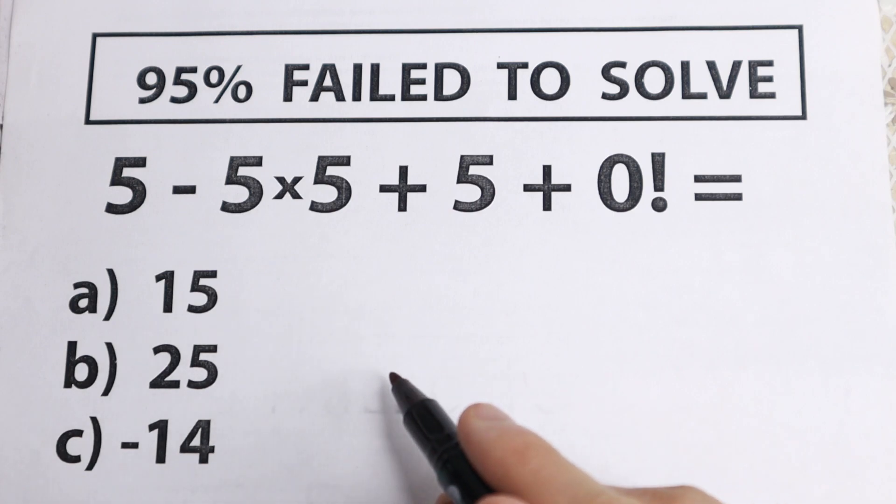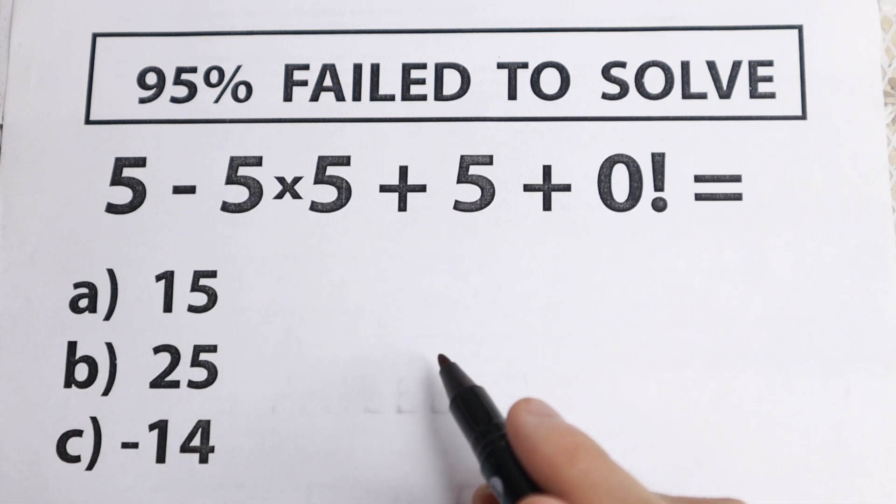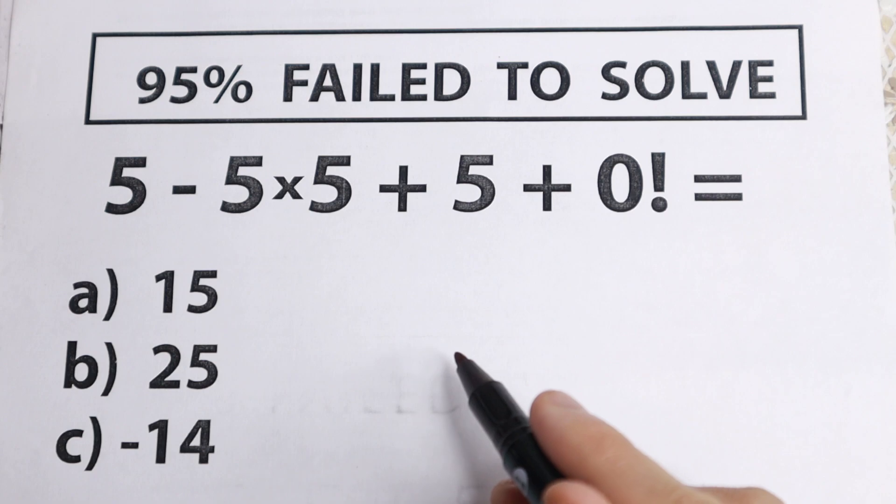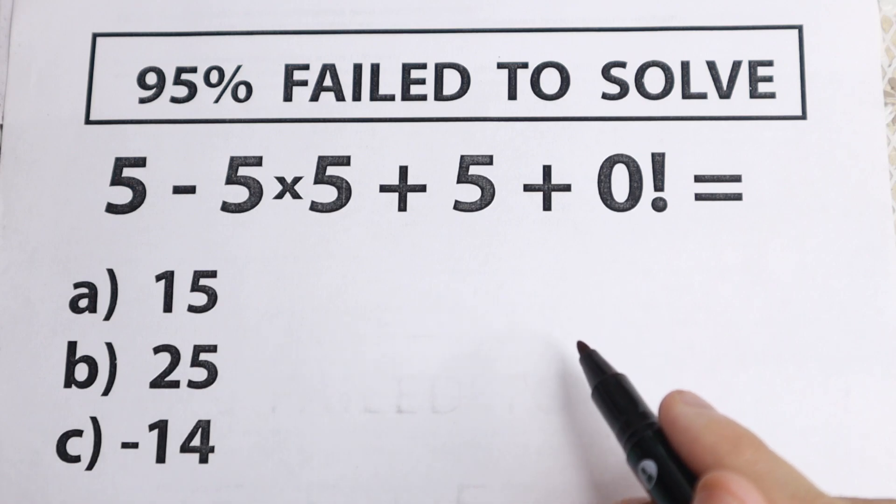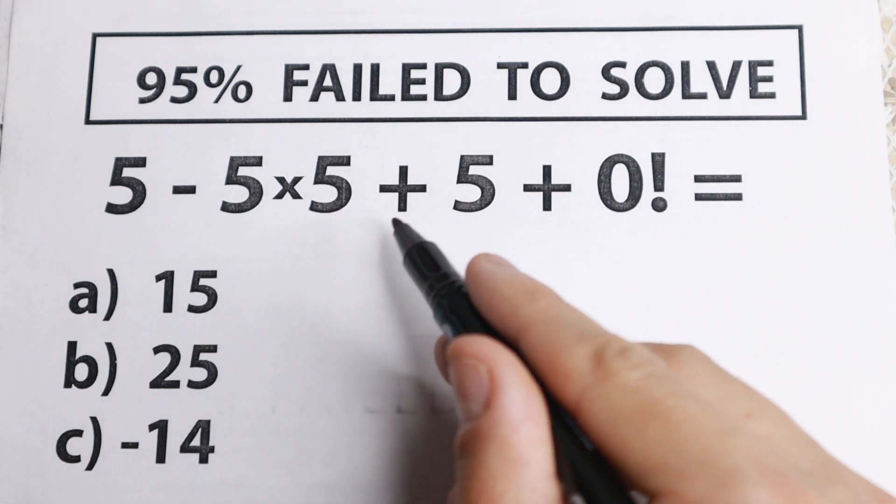and try to solve it by yourself. Try to find the correct answer, and after 30 seconds we'll check if our answers are the same. It will be more interesting for you and me to see how many answers are correct. The problem is 5 - 5×5 + 5 + 0!